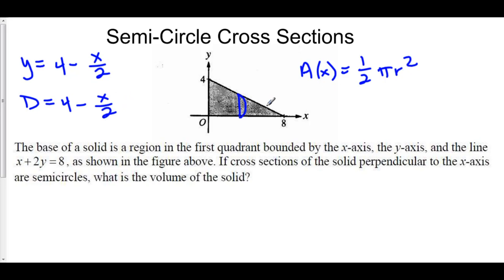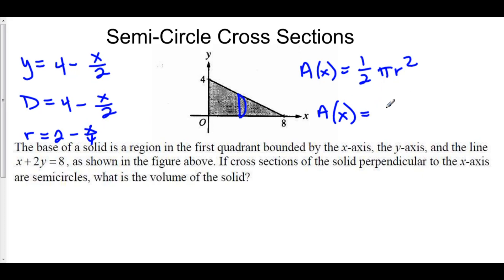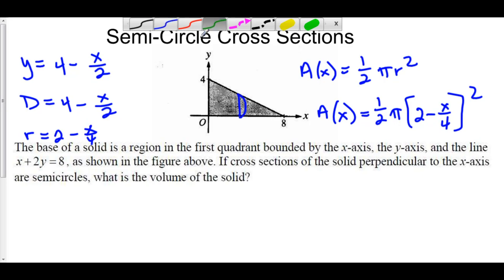The radius is half the diameter, which means the radius is equal to half of this, which will be 2 minus x over 4. Because half of 4 is 2 and half of x over 2 is x over 4. Plugging this into r, we now get that the area of each of these cross-sections in terms of x is one-half pi times the quantity 2 minus x over 4, squared.